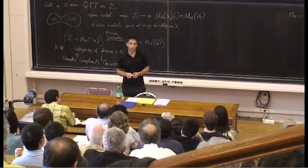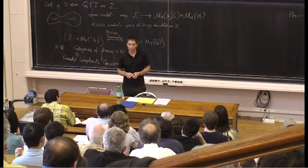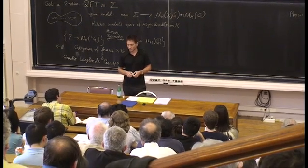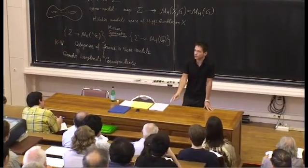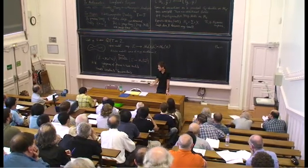But in 1940 André Weil also wrote a letter to his sister. In fact he was in jail for refusing to serve in the army, and he wrote a letter to his sister Simone Weil, who was a noted philosopher, explaining what interested him in his mathematical work. This is a wonderful document in which he talks about the power of analogy in mathematics, trying to explain things in a way accessible even to a philosopher.